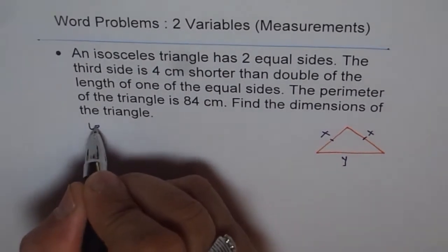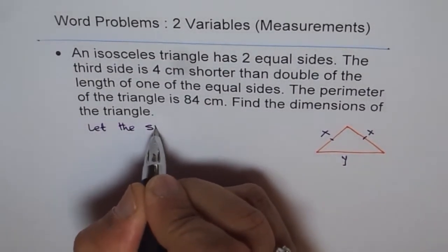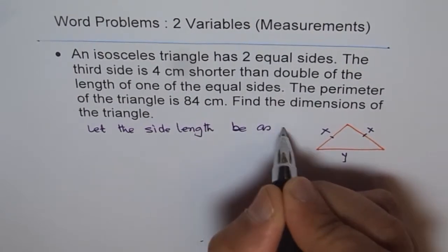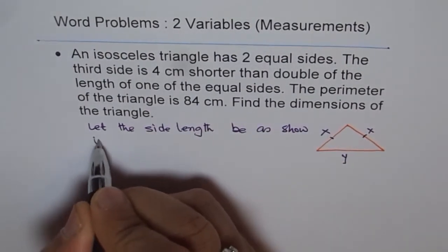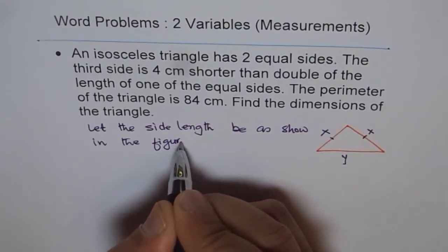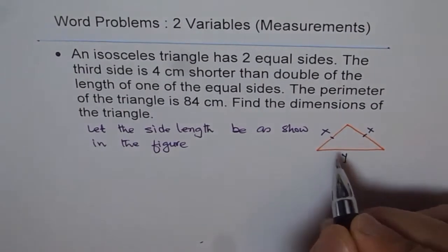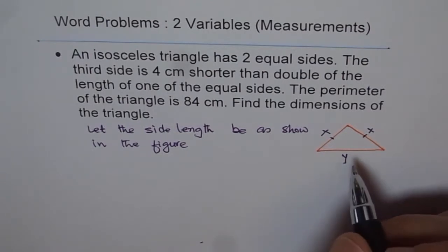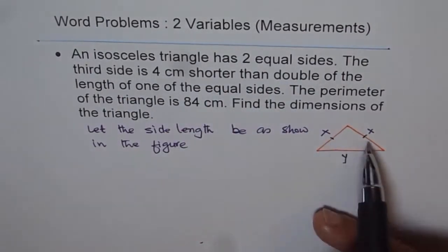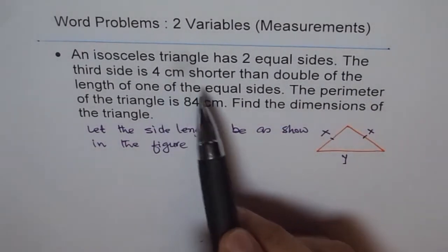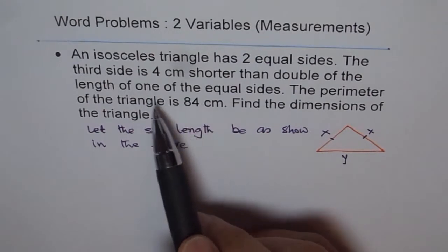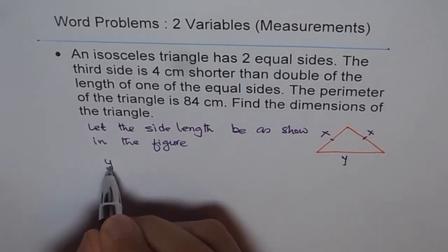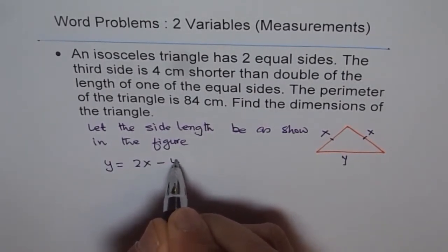Now let the side lengths be as shown in the figure. When you write it like this, it means these two sides are equal, both are x, and the third one is y. Let's read the question and write down our equations. The third side is 4 cm shorter than double the length of one of the equal sides, so 4 cm shorter than twice x. Therefore, y equals 2x minus 4.